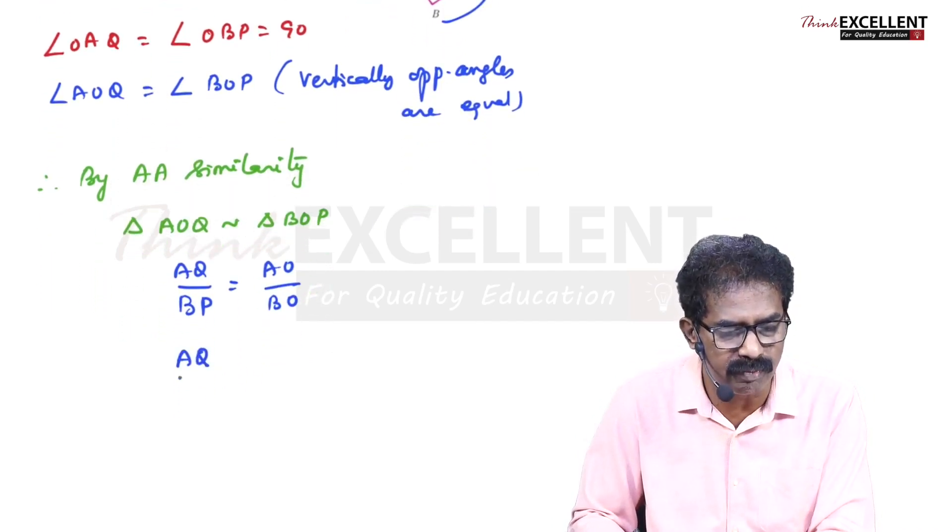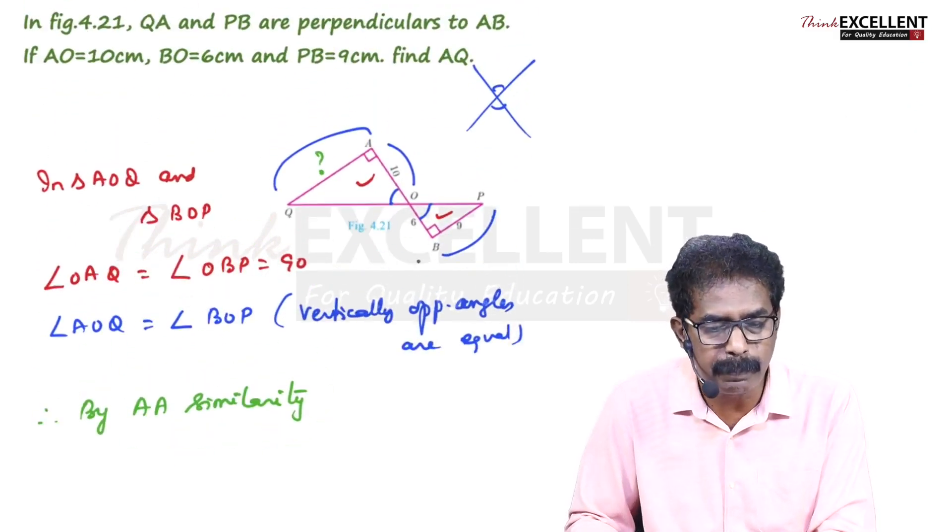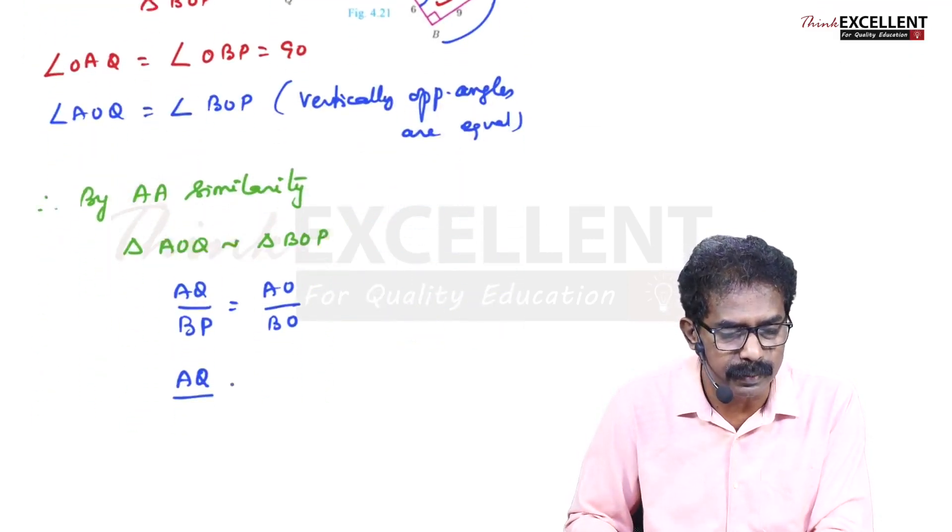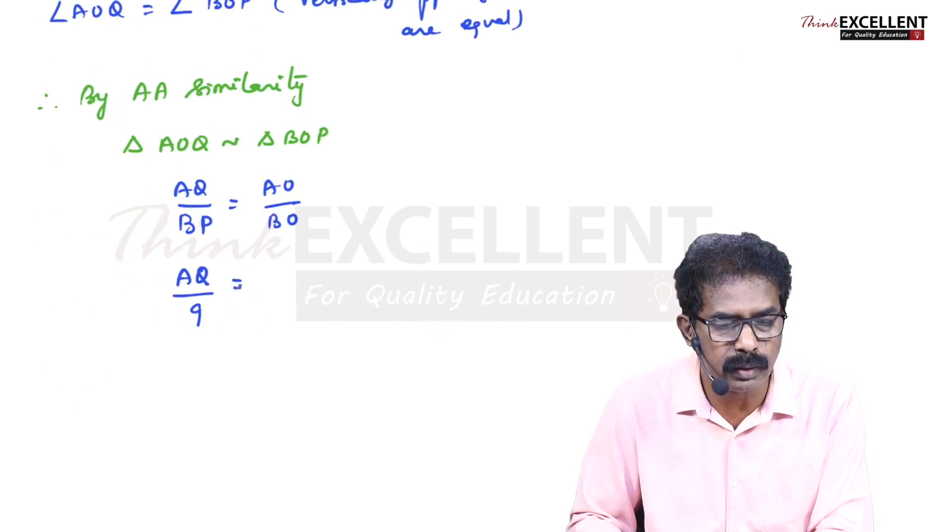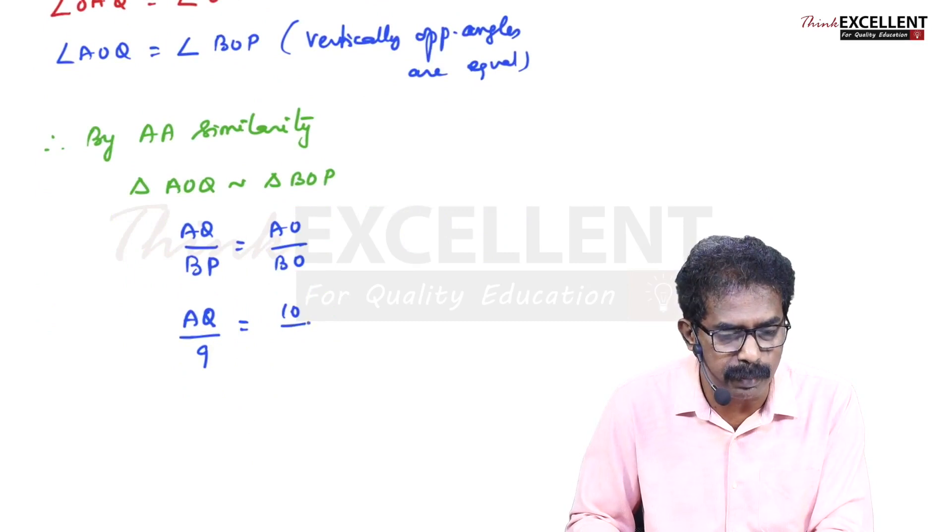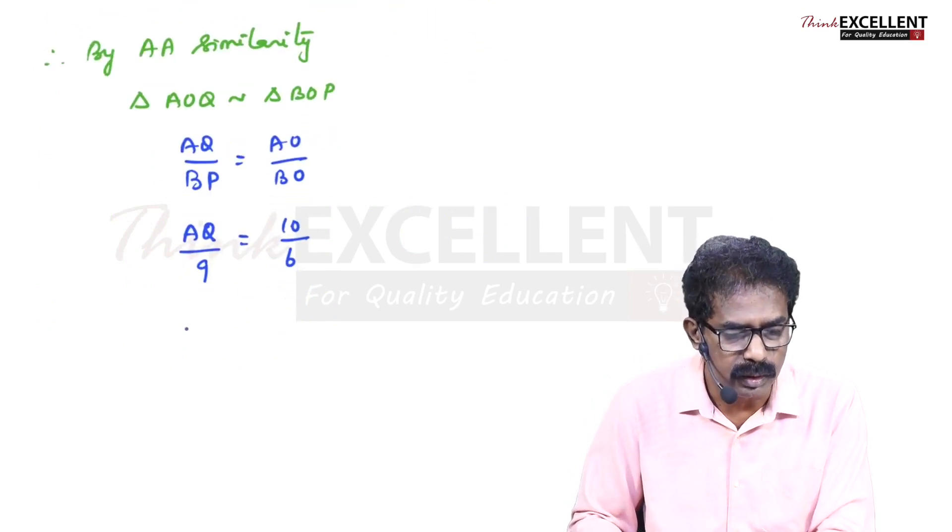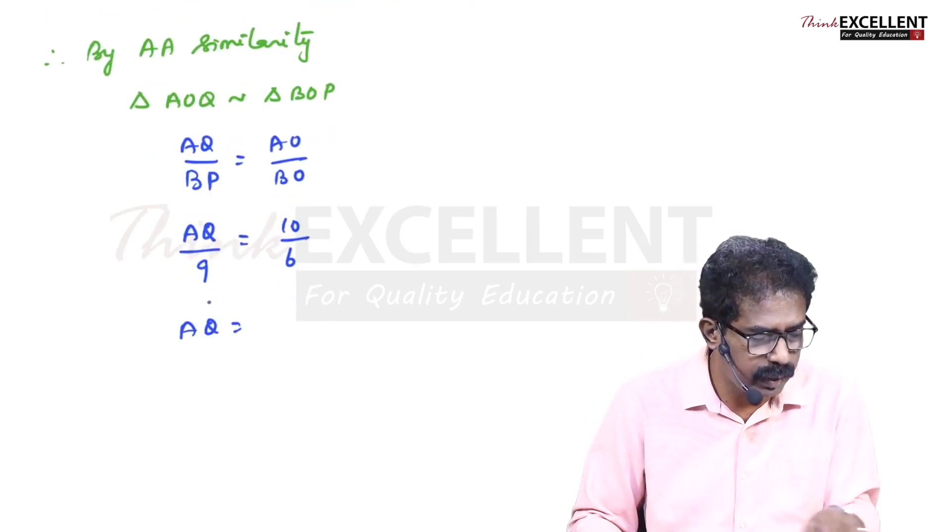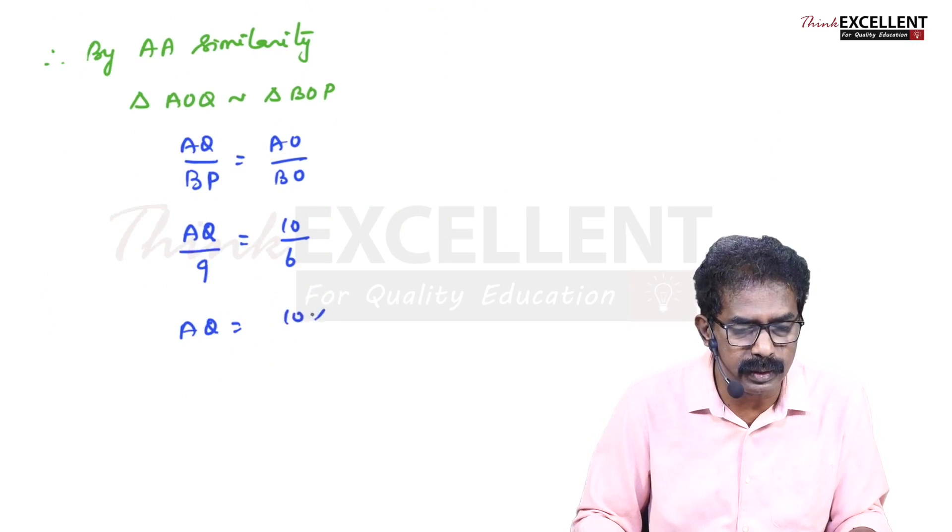AQ we don't know, that's what we want to find. BP is 9, AO is 10, BO is 6. So AQ equals 10 times 9 by 6.